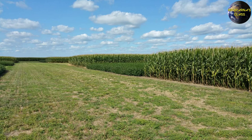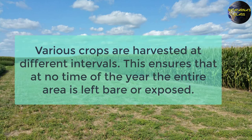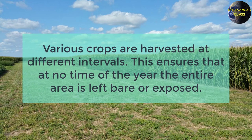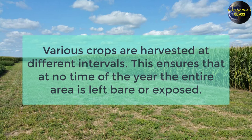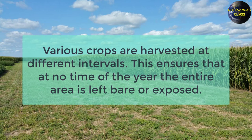Some strips may be allowed to lie fallow while in others different crops may be grown. Various crops are harvested at different intervals. This ensures that at no time of the year is the entire area left exposed.